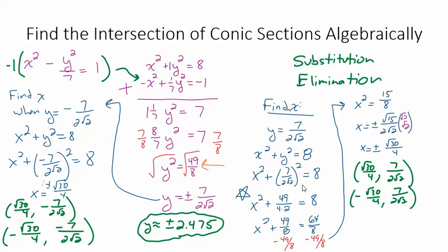Let's see what our x value is as a decimal. So our x value is square root 30 over 4. If you punch that in your calculator, you get plus or minus 1.369. Double check me. Punch in square root 30 over 4.